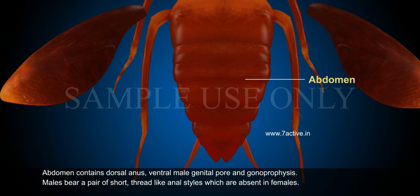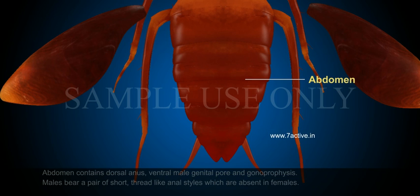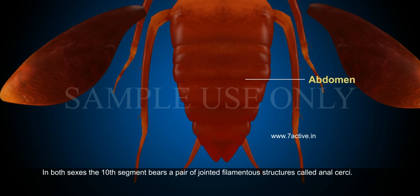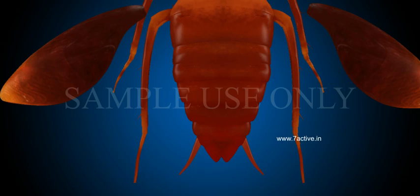Males bear a pair of short thread-like anal styles which are absent in females. In both sexes, the tenth segment bears a pair of jointed filamentous structures called anal cerci.